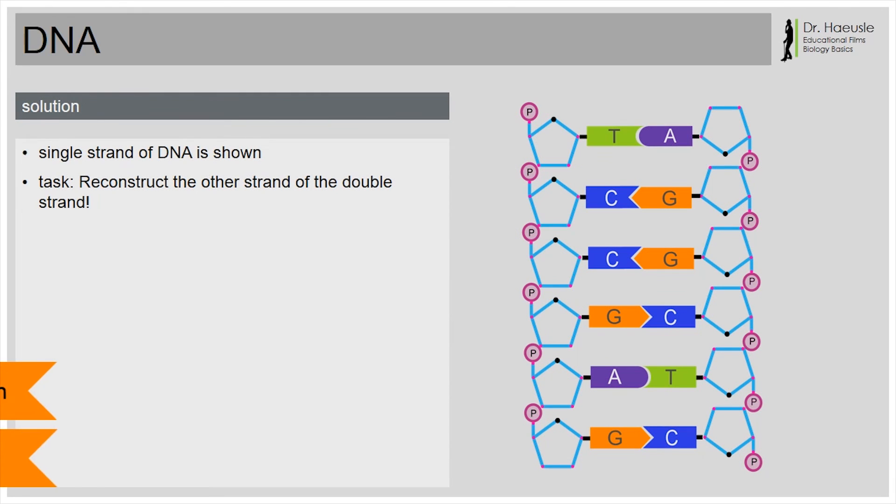In our coming videos about transcription and translation, we're going to explain why this is so important. So far, we have learned about the structure of the DNA strands. Base pairing connects the strands. The DNA double strand is twisted in itself. It has a double helix structure. Exactly.